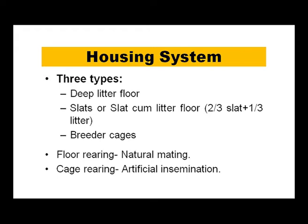Housing systems are normally on deep litter, floor, slat, or slat-cum-litter floor, and breeder cages. In floor rearing, natural mating occurs and artificial insemination is not required. In cage rearing, artificial insemination is the only option. The main purpose is to allow males and females to mate so that fertile eggs can be obtained, from which day-old chicks are hatched and grown to produce either meat or eggs.